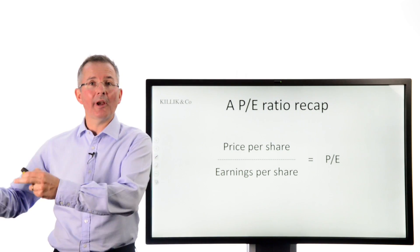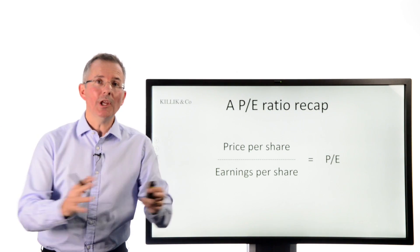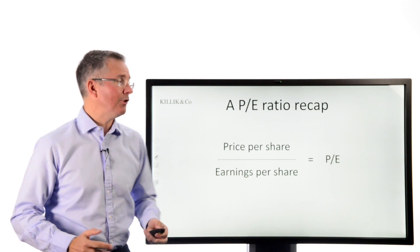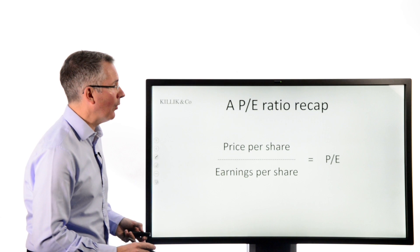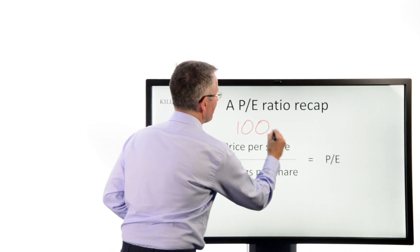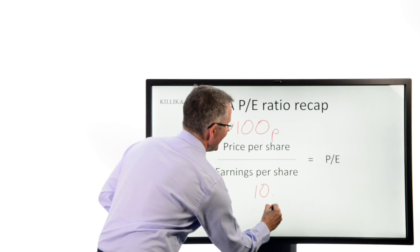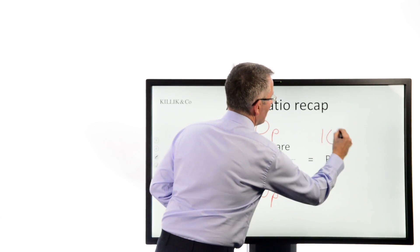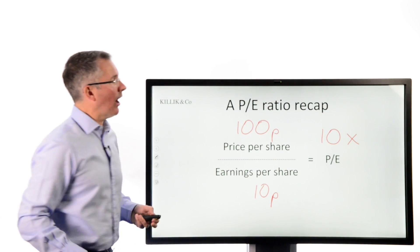It can be done on a historic basis, or it can be done using a one-year projection of future earnings. And it gives you a multiple. So the PE ratio, if the share price is, say, 100 pence and earnings per share is 10p, the PE ratio gives you a number like 10 times.